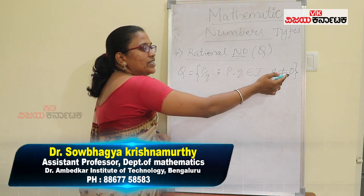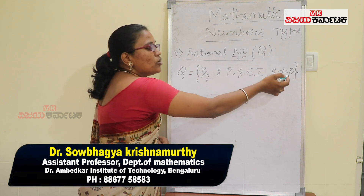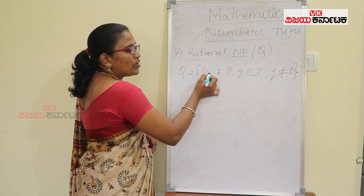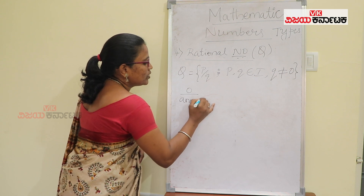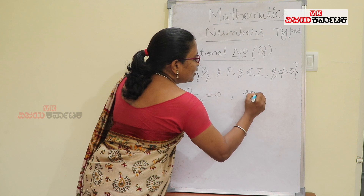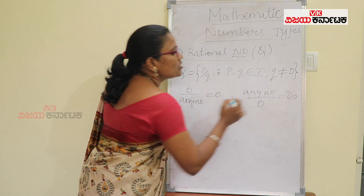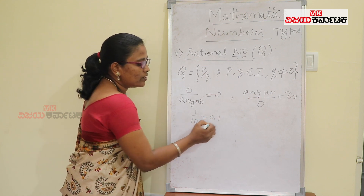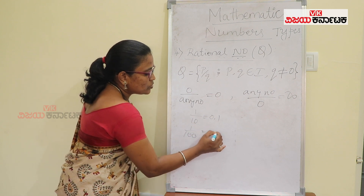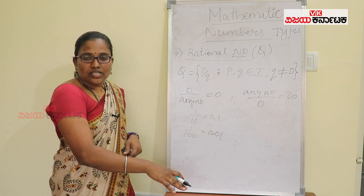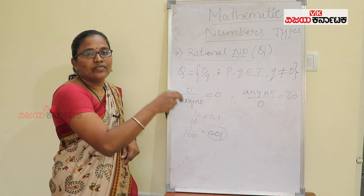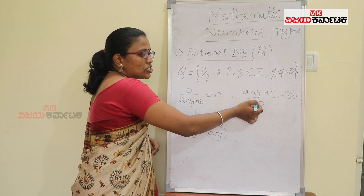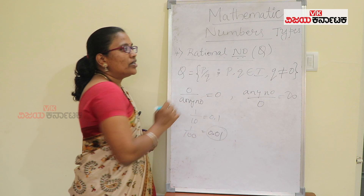Why should the denominator never be 0? Zero is an integer, but any number divided by 0 gives you infinity — a not defined value. For example, 1 by 10 gives 0.1, and 1 by 100 gives 0.01. As the denominator value increases, the decimal value becomes very less, so 1 by infinity becomes almost equal to 0. Therefore any number by 0 gives you infinity, and so our denominator should not be 0.